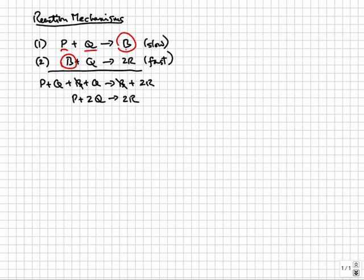So we expect the success rate of making B by the first reaction is proportional to the concentration of P times the concentration of Q. So the rate of the first reaction is equal to some constant we call K1 multiplied by the concentrations of P and Q.